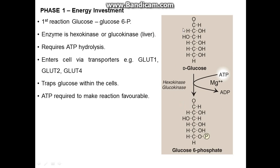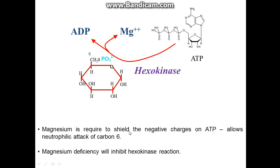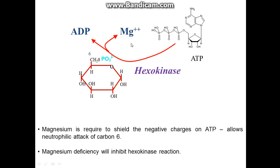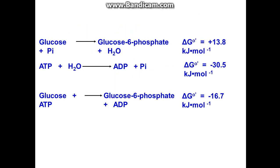Without ATP, this reaction doesn't go forwards. Magnesium²⁺ ions are required to shield the negative charge on ATP and allow for the nucleophilic attack on carbon 6. Magnesium deficiency will inhibit the hexokinase reaction, which is one of the reasons we need magnesium in our diet.